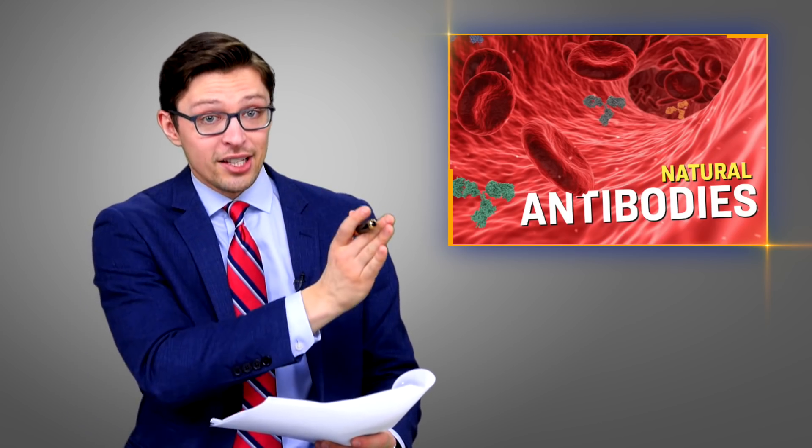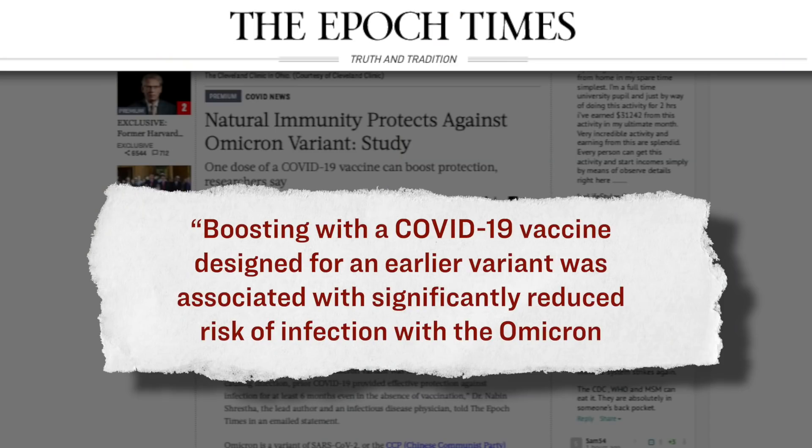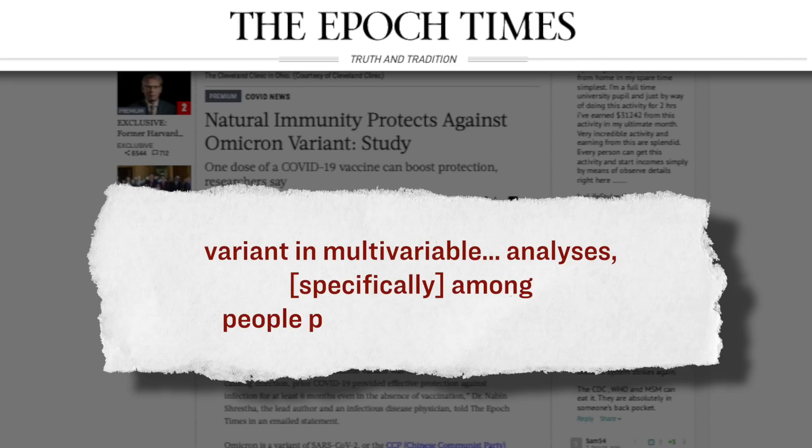However, the researchers found that if the naturally immune individual received a single dose of the vaccine, then their protection would last longer. Here's what they wrote: 'Boosting with a COVID-19 vaccine designed for an earlier variant was associated with significantly reduced risk of infection with the Omicron variant in multivariable analyses, specifically among people previously vaccinated or previously infected for whom it was more than six months past their prior infection or vaccination.'